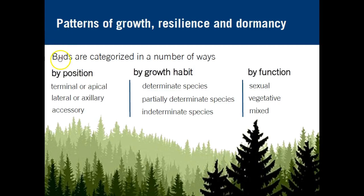Buds can be categorized in three different ways: by position on the tree — apical or lateral buds; by growth form or habit — determinate species like Douglas fir, indeterminate species like western red cedar, or partially determinate species like western hemlock; and by function — some buds are vegetative, some are sexual, or some are a combination.